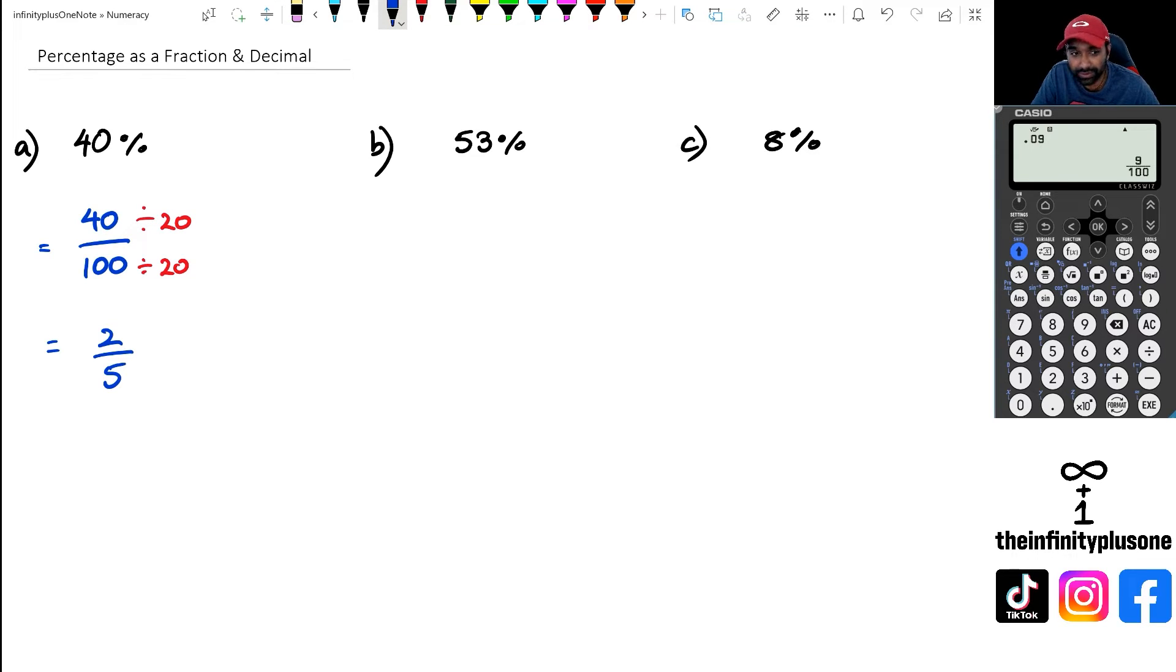But how do we write this as a decimal? Now to do that we're actually going to leave it as 40 over 100, because when we leave it as 40 over 100 we can see that there are two zeros in the denominator, which means the decimal point is moving two spots, which also means this answer here is going to be 0.40. Now when it comes to writing this answer you don't actually need to write the zero after the four, because 0.4 is the same thing as saying 0.40.